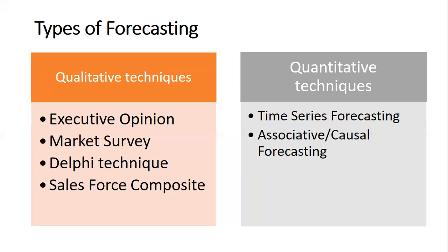The associative model, often called the causal model, assumes that the variable being forecasted is related to other variables in the environment and tries to project based upon those associations. For example, understanding the increase of room sales in May and June in India: room sales as a variable is associated with the variable of holidays. Since May and June is a holiday time and people visit other cities and stay in hotels, this increases the demand for room sales — showing the impact of holidays on room sales.